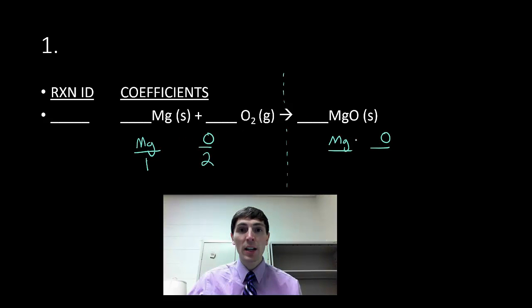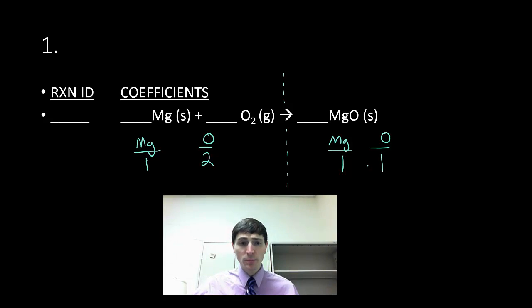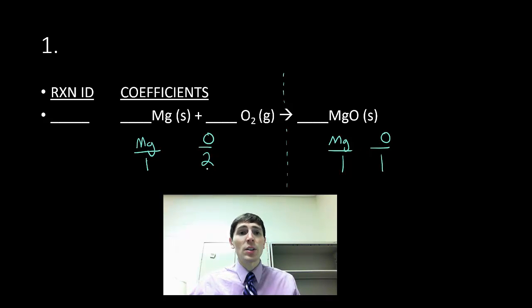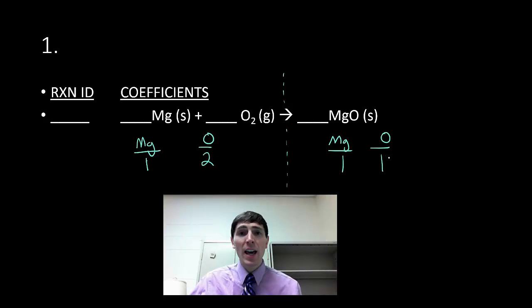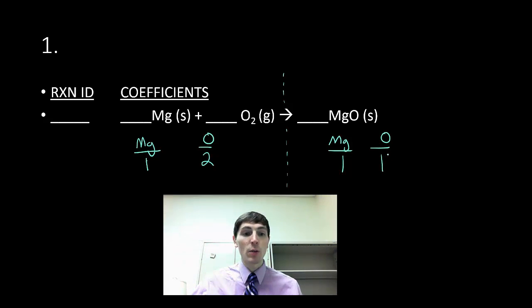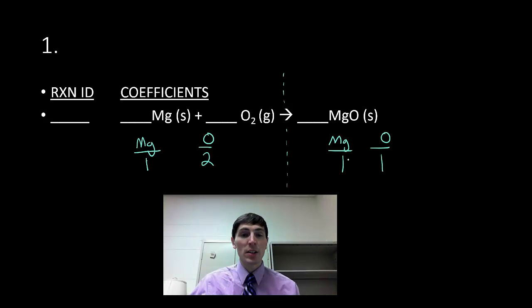Looking at the other side of the equation, I have one magnesium and only one oxygen. This violates the law of conservation of mass because I have more oxygen to start with than I do at the end. We can't just lose an atom of oxygen — we have to have a recipe that balances out. So what we're going to do is add coefficients in step two — not subscripts — coefficients to balance all these numbers.